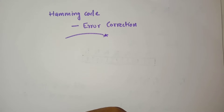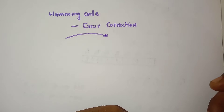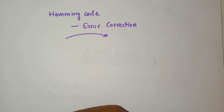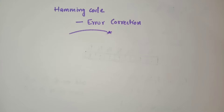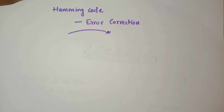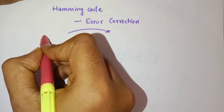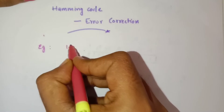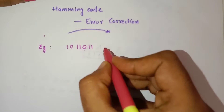Hi friends, welcome back to my YouTube channel. In my previous video I discussed about Hamming code basics and how to find error detection using Hamming code. In this video I will discuss how to correct the detected error. Mainly 7-bit Hamming code is used for sending the message. In 7-bit Hamming code, 4 bits are data bits and 3 bits are parity bits. Let's see an example for error correction.